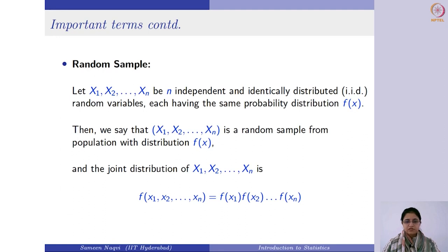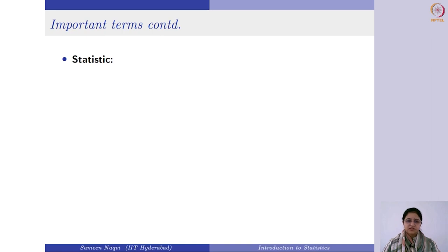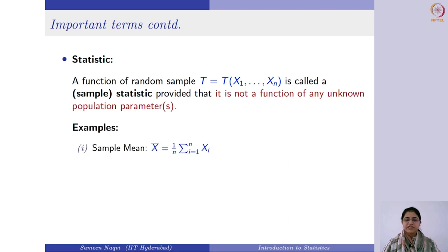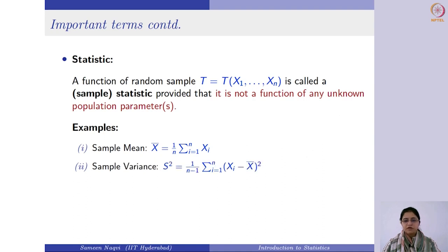The next term is sample statistic. A sample statistic is basically a function of the random sample itself, provided it is not a function of any unknown population parameter. You can define any function of the xi's — as long as it does not contain an unknown population parameter, you refer to it as a sample statistic. For instance, sample mean X-bar equals 1/n times the summation of xi — this is a function of the random sample and does not involve any unknown population parameter.